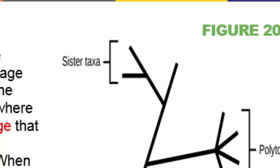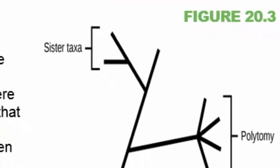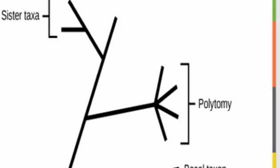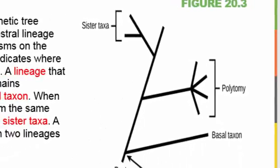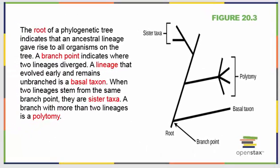Sister taxa species may have a lot in common and remain closely related, but they're two clearly defined species. A polytony is when one species undergoes something like adaptive radiation and becomes many species in one singular speciation event — think about Darwin's finches, that's a great example. So when you're looking at trees, this is what you should be considering.